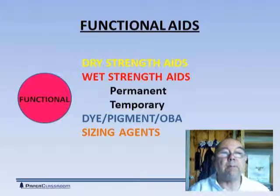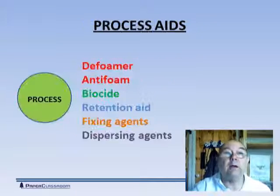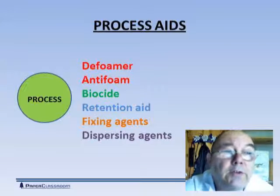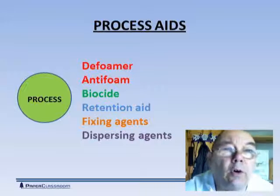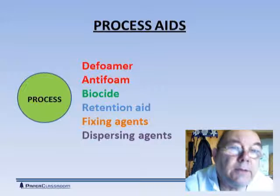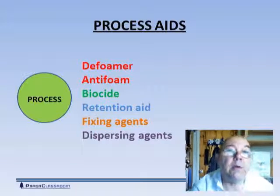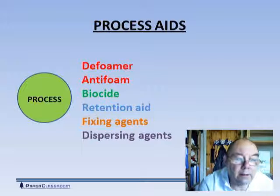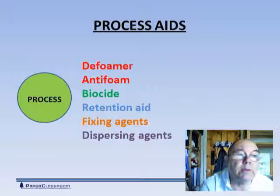We've given some examples of functional agents, and we can move on now to process aids. Process aids are there for the benefit of the process. For example, anti-formers and deformers are there to either stop air getting entrained in the system or to get rid of it when it is there, so that we don't get foam. If we don't get foam, we don't get foam spots and we improve the appearance of the sheet. Anything to do with removing air is always good.